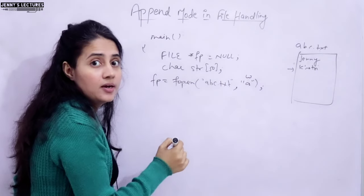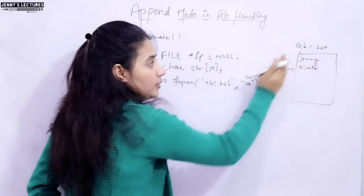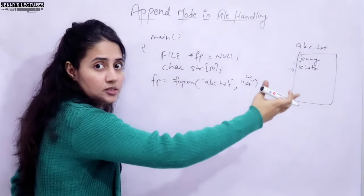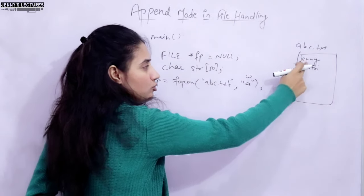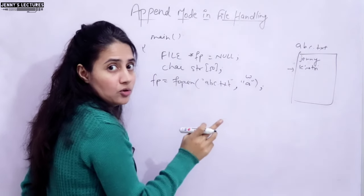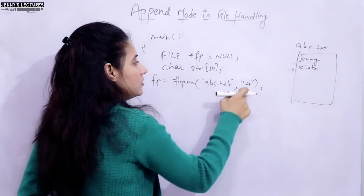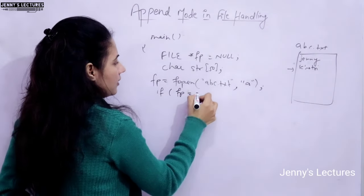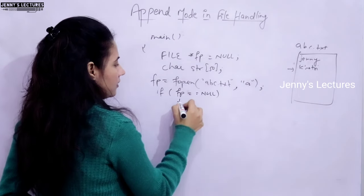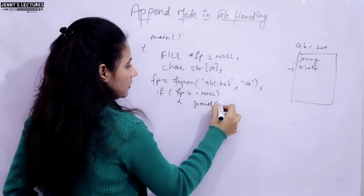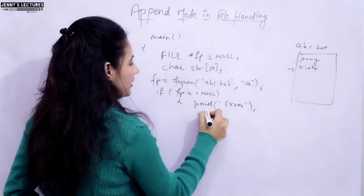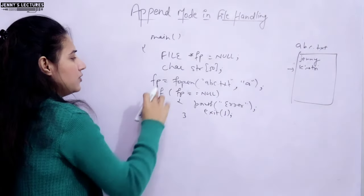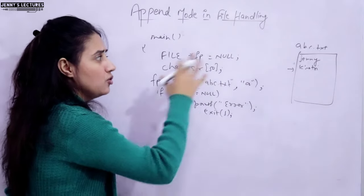If you open in write mode, 'Jenny' would be erased and only 'Khatri' would remain — the previous content gets overwritten. But I want to keep the previous content as well as add the new content. So we open the file in append mode. Then we check: if fp is null, that means an error, and we call exit(1).